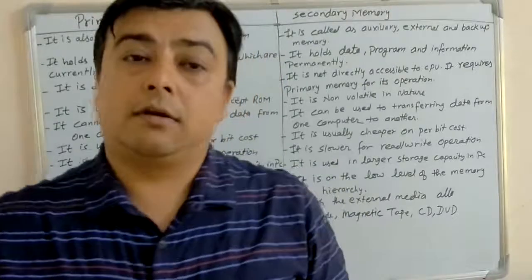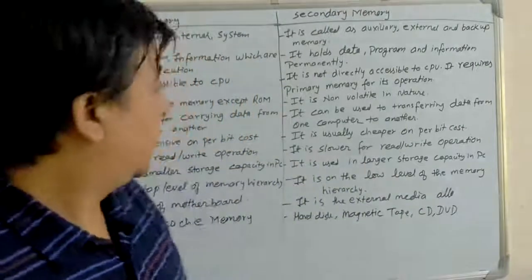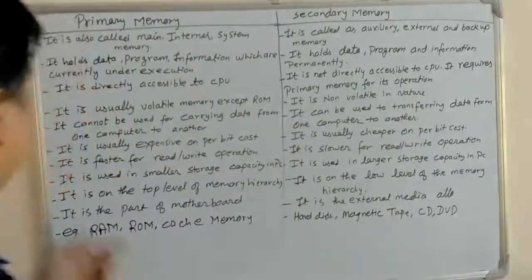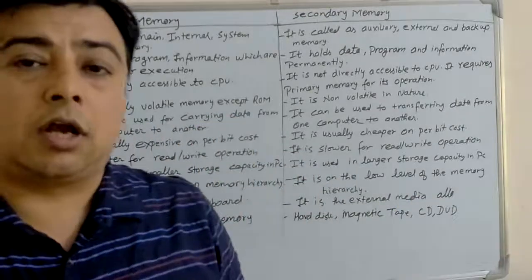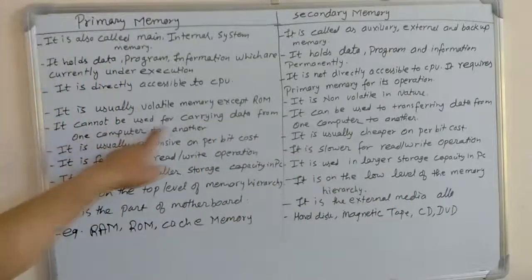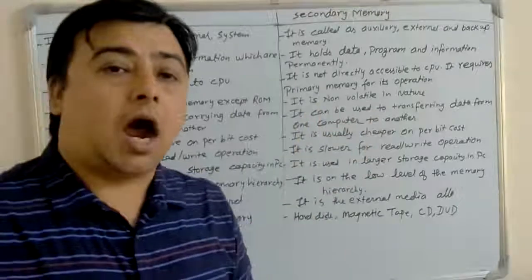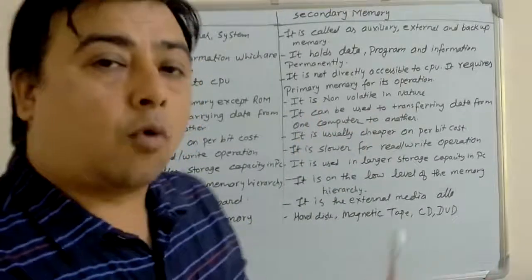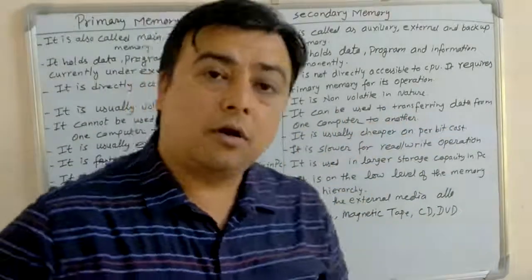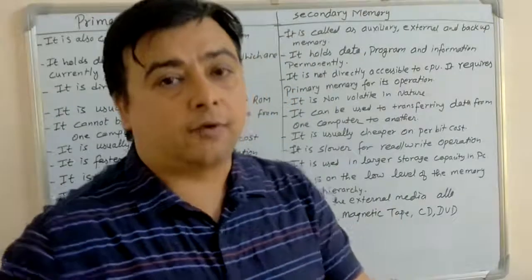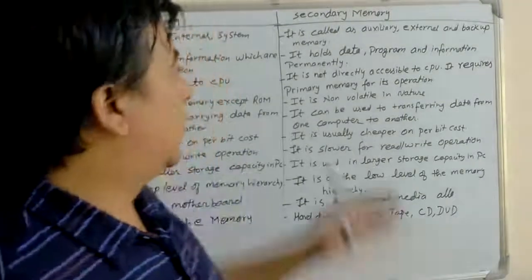The data stored in secondary memory is not lost if the power supply is off, so it is non-volatile in nature. We cannot carry data from one computer to another using primary memory, but secondary memory can be used to transfer data from one computer to another. We use pen drives or external hard drives to transfer data using secondary memory.